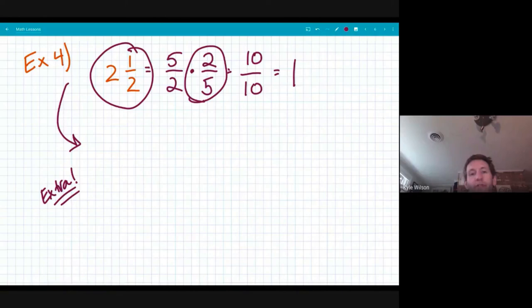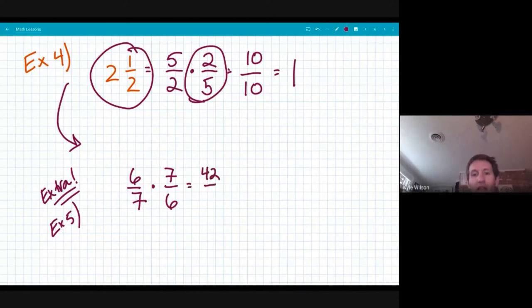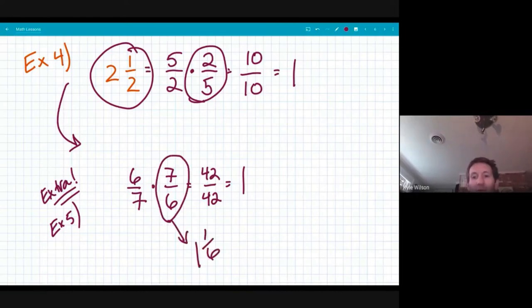So let me throw in this extra here for you. Let's suppose I have, we'll call this example five. Let's say I had a fraction like six sevenths and I'd have to find the reciprocal for six sevenths. Well, the reciprocal, what would give me an answer of one would be seven sixths because six times seven is 42 and seven times six is also 42. And that would give me one. So the reciprocal of six sevenths is seven sixths, which you know is also one and one sixth.